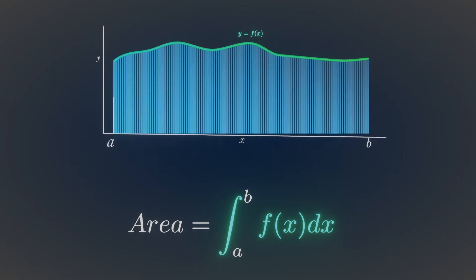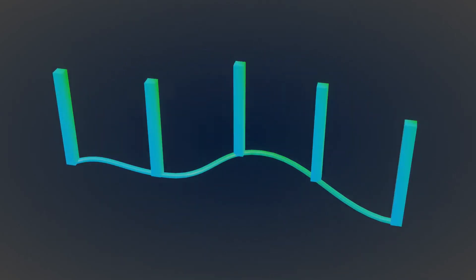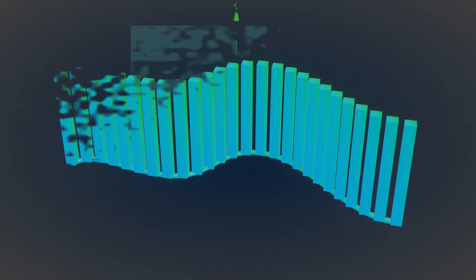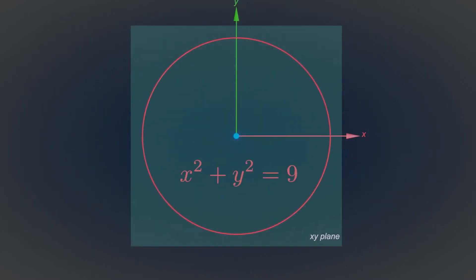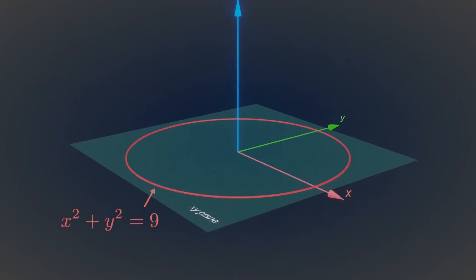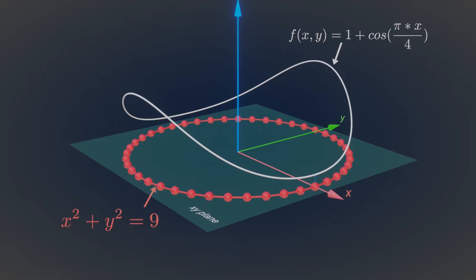Now, let's try to add those sticks on a 2D curve and try to integrate the function. Here is a parametrized equation of a circle in the xy plane. Now let's plot another curve orthogonal to this circle. Here, every point of this circle is projected upward, which builds this beautiful function.